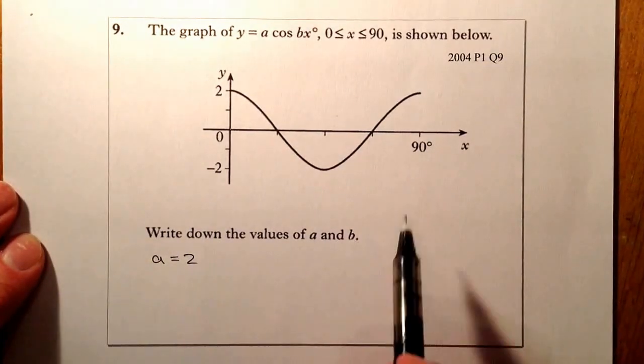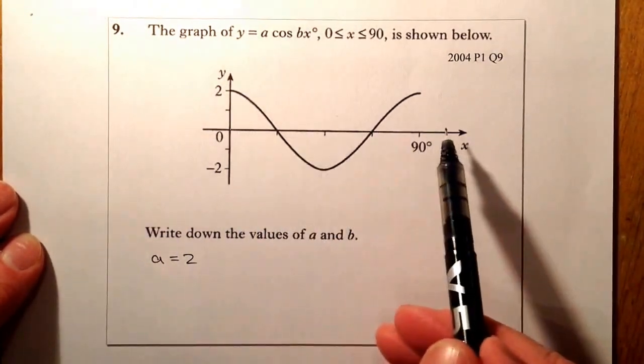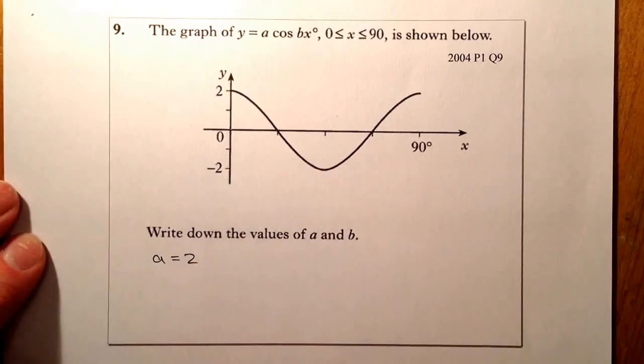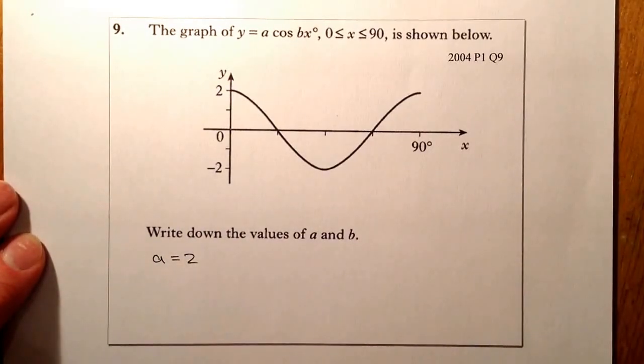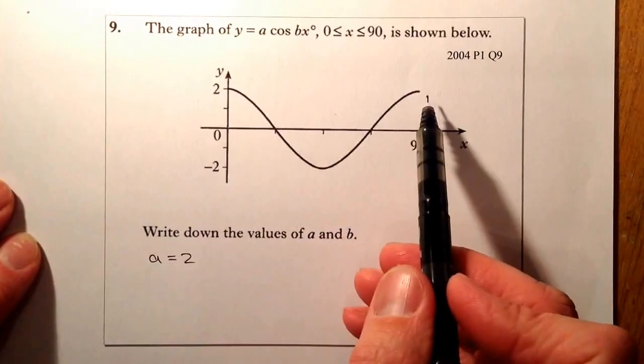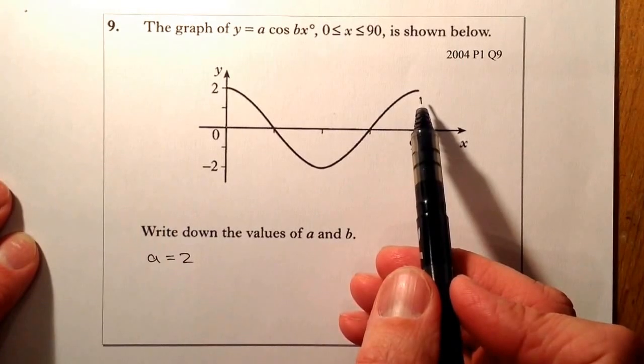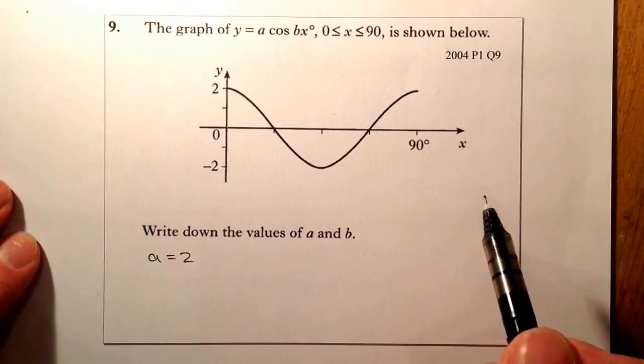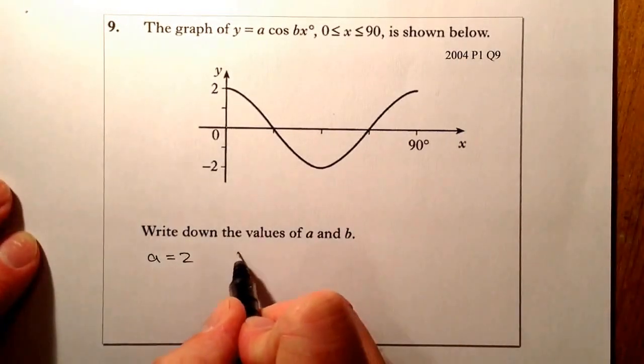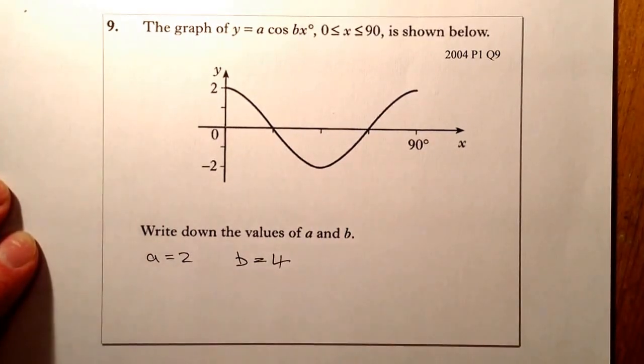The next part for b, so b is going to determine how many cycles there are in 360 degrees. So if I know that there's one cycle in 90 degrees, I'm sure I could fit 4 cycles into 360 degrees. So I know that my value for b is going to be equal to 4.